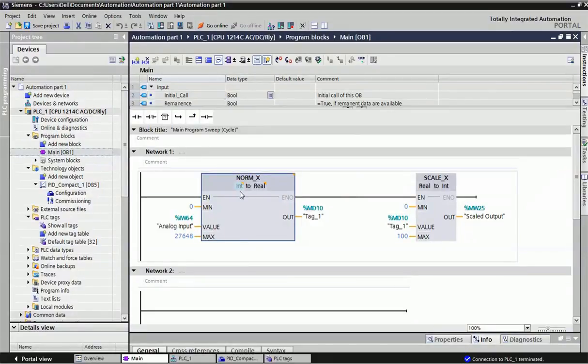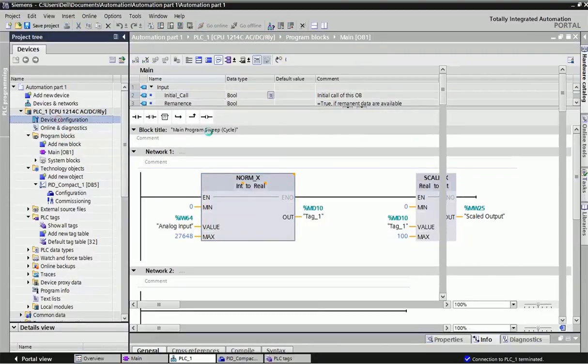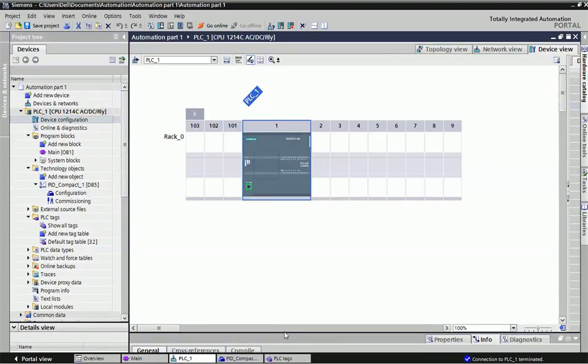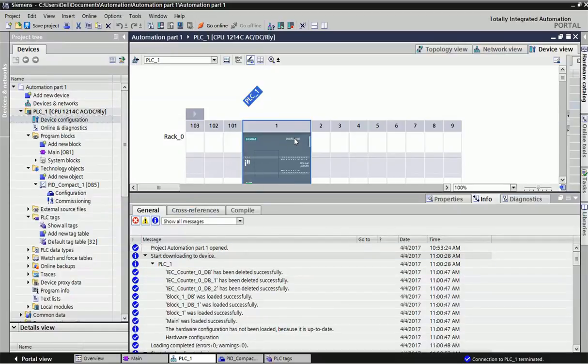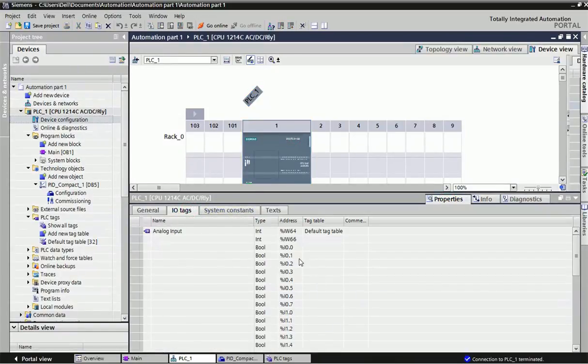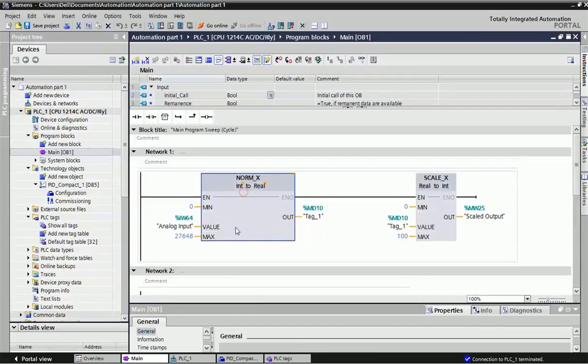We are giving input IW64 here, because in S7-1200 PLC, the input analog addressing starts from IW64. That we came to know from the input-output addressing. Here you can see two types of analog signals: IW64 and IW66. I have assigned IW64 analog value, with the minimum and maximum range of the raw value. This value we are getting in real data type, 32 bits, so I have assigned memory double word to store the data.